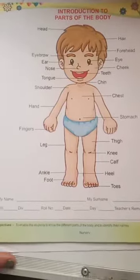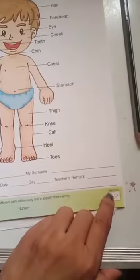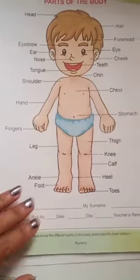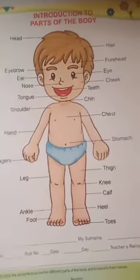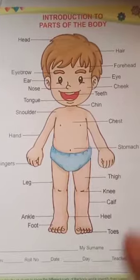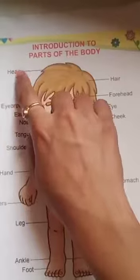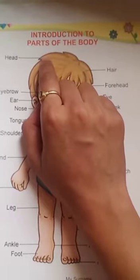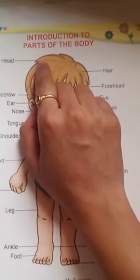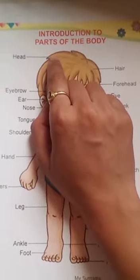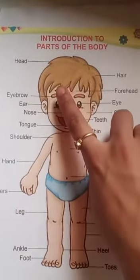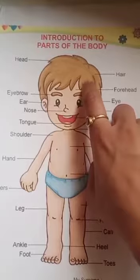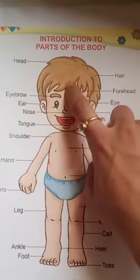This is our worksheet, page number 167. Students, here are parts of the body. Let's start. Can you tell me students, what is this? This is head. Do we have a head? Yes, we have a head. What is this in our body? This is forehead.